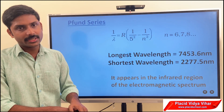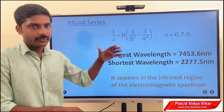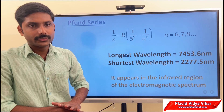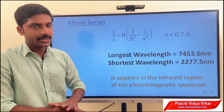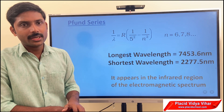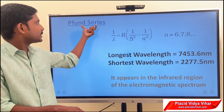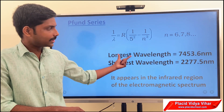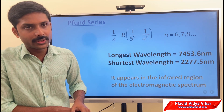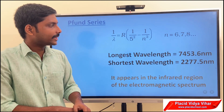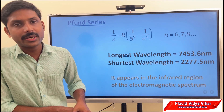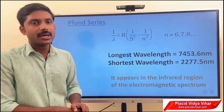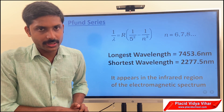The final series is the Pfund series. Whenever there is a transition from any higher energy level to the fifth orbit or fifth energy level, that spectrum is called the Pfund series. The longest wavelength is 7453.6 nanometers and the shortest wavelength is 2277.5 nanometers. This series also occurs in the infrared region.